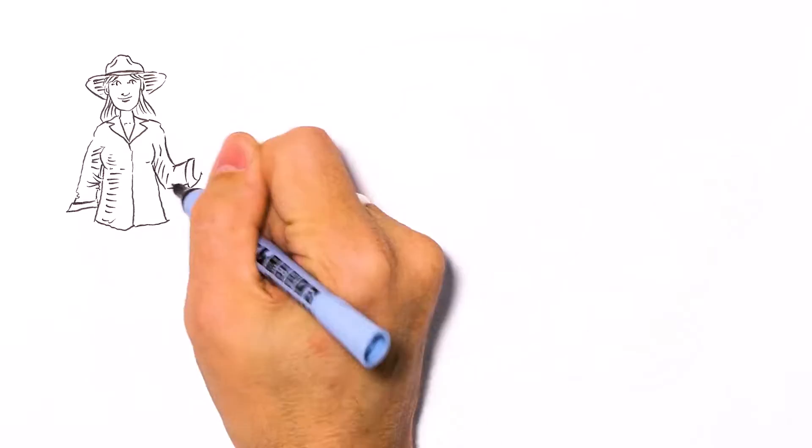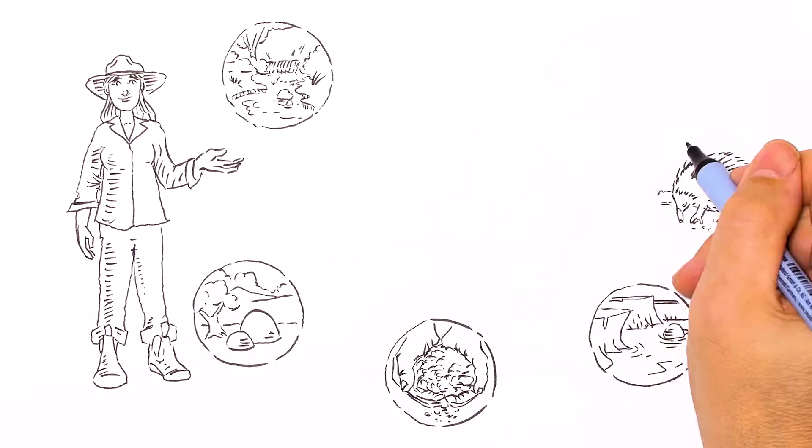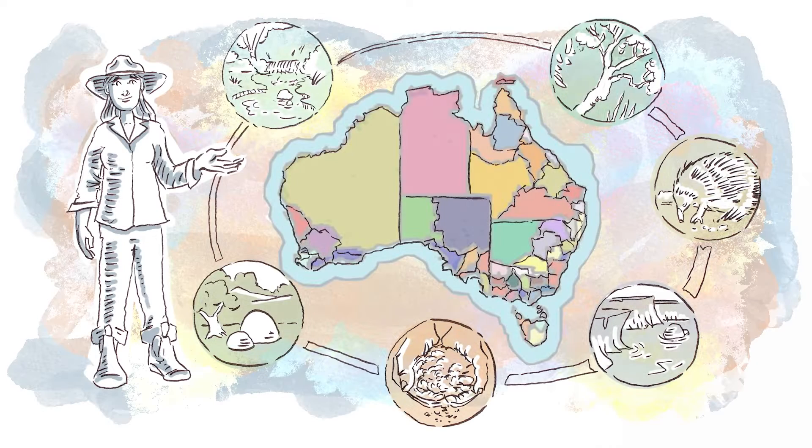The 54 regional NRM organizations work with diverse partners to look after our water, land, soil, coast, plants and animals for the benefit of people, the environment and the economy.